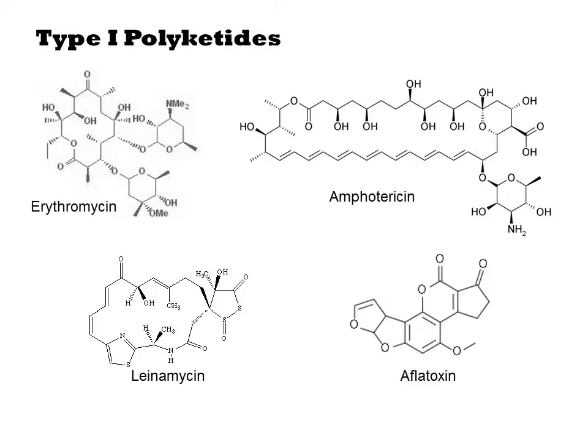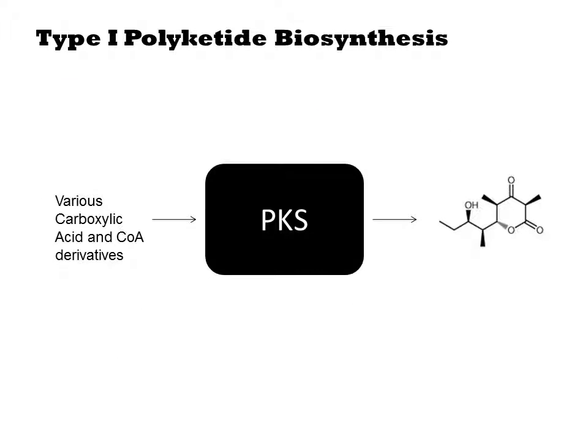Each 2-carbon unit can be finished in one of several forms that includes alcohols of different chirality, olefins, and methyl groups. The black box description of the type 1 PKS is an enzyme that inputs a list of carboxylic acid and malonyl-CoA derivatives and outputs an elaborately structured carbon moiety.